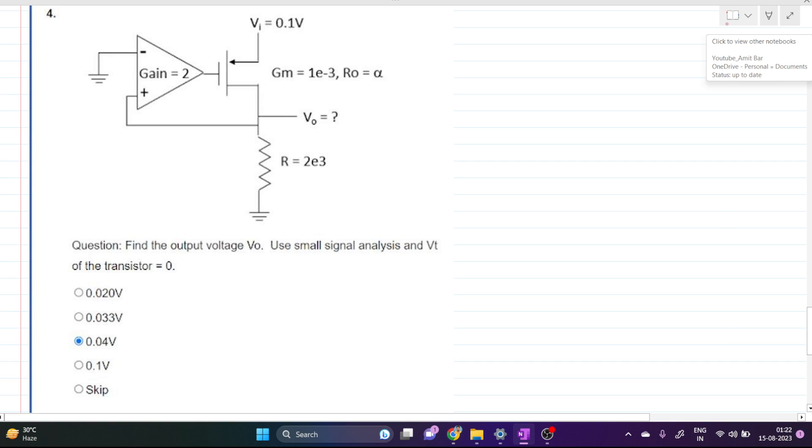Welcome everyone to this video. Today we will solve this problem. Read the question first: find the output voltage V_o using small signal analysis and V_t of the transistor is zero. Small signal analysis means our small signal V_i is 0.1 volt.